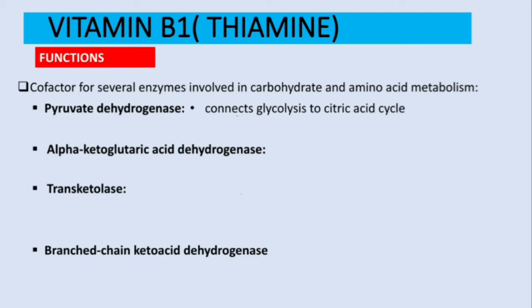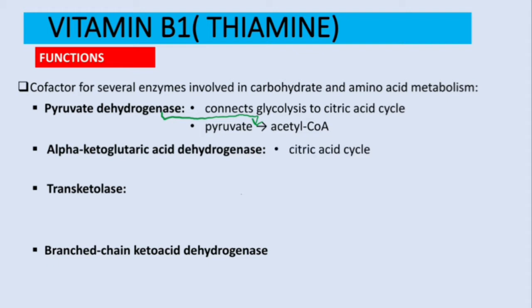Pyruvate dehydrogenase connects glycolysis to the Krebs cycle (citric acid cycle). It acts on the transition step from pyruvate — a three-carbon acid — to acetyl-CoA, which is two carbons. The next enzyme, alpha-ketoglutarate dehydrogenase, is found in the citric acid cycle and acts on the step where alpha-ketoglutarate is converted to succinyl-CoA.